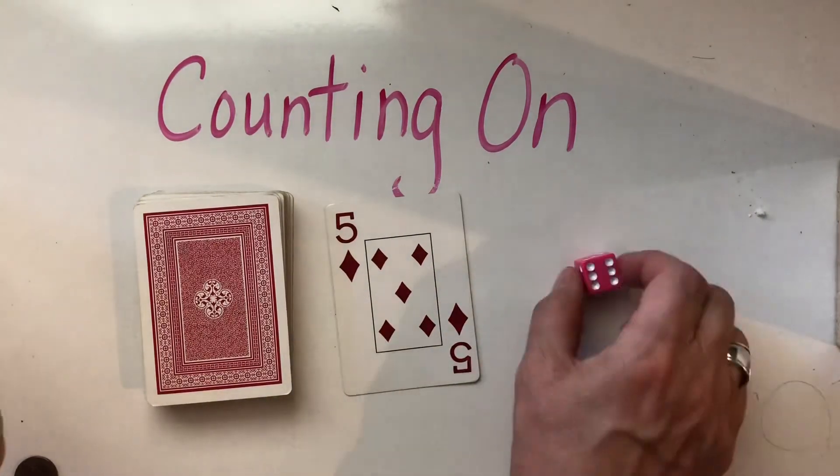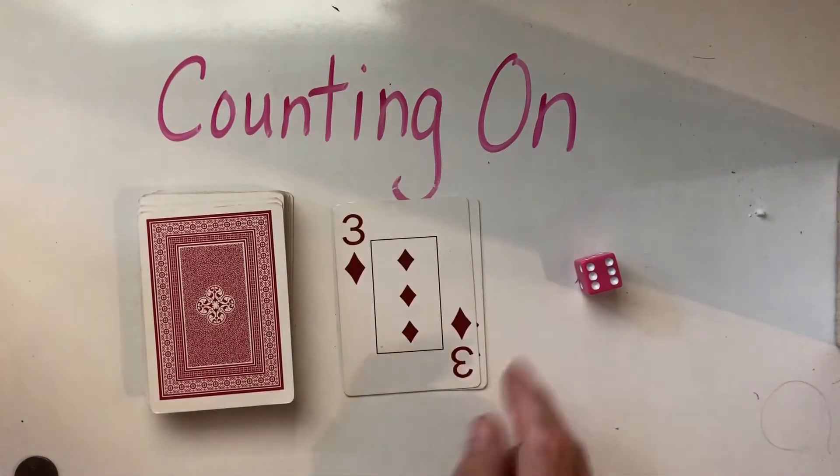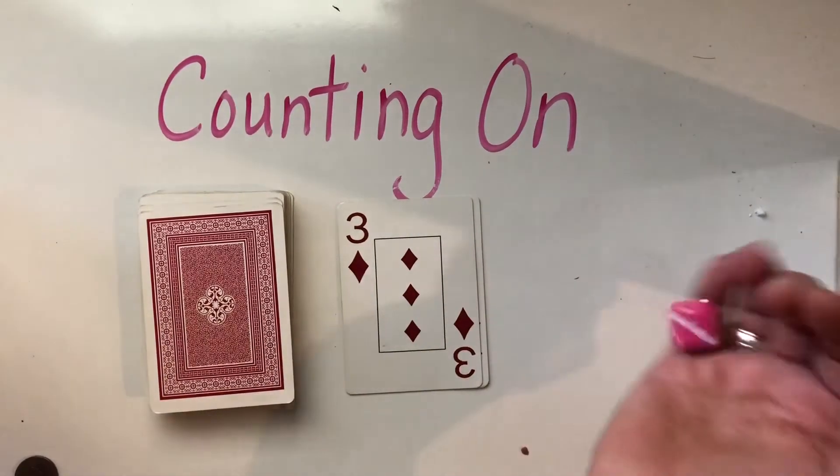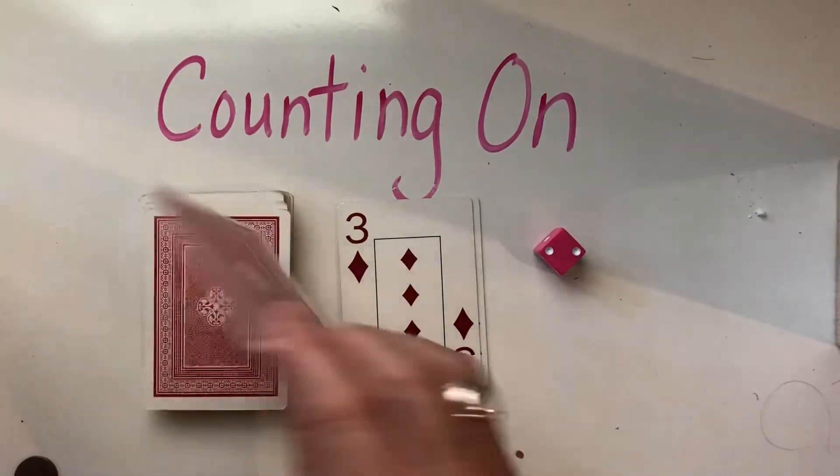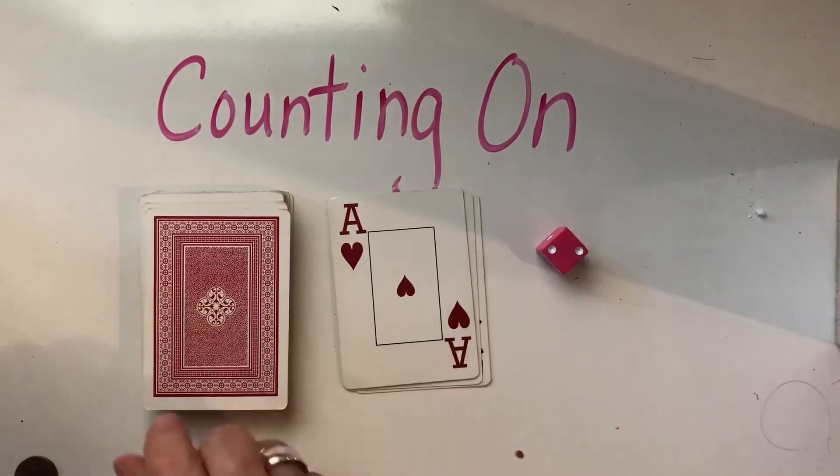So let's try another one. Here's six. Six, seven, eight, nine. Two. Let's count on from two. Two, three. Good.